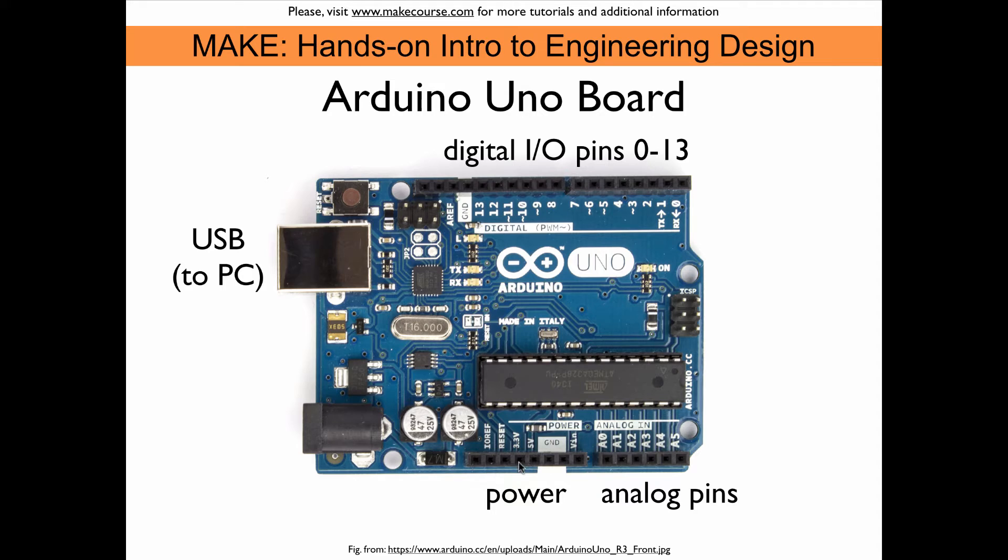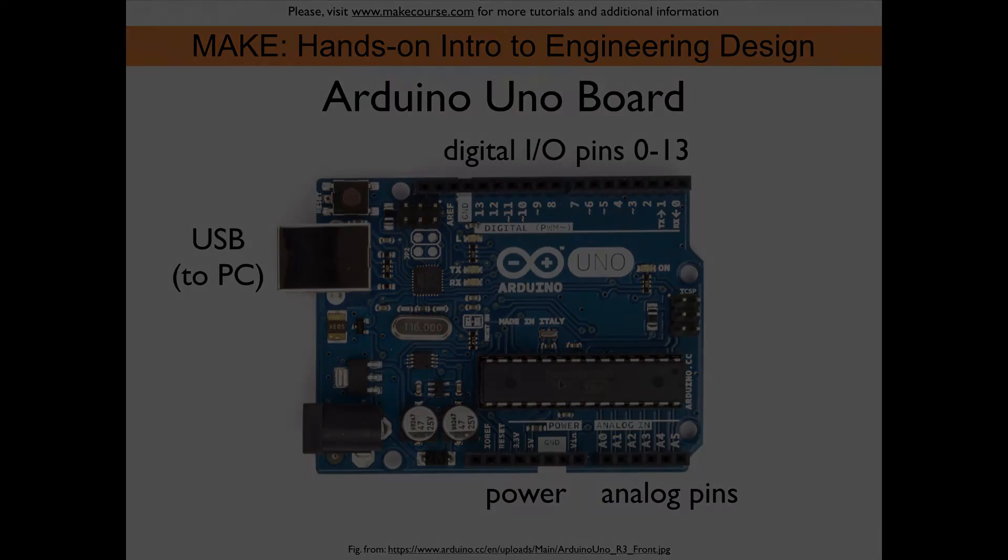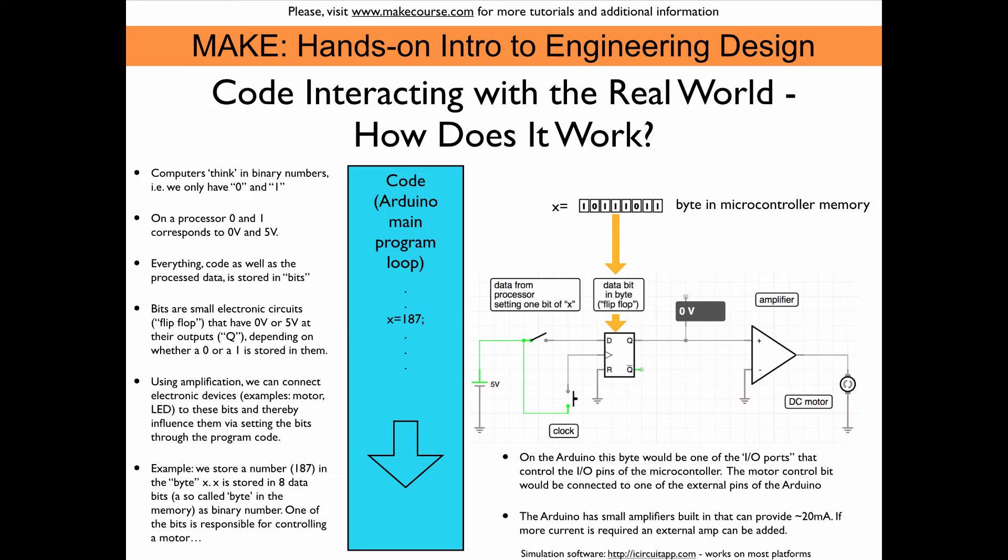These headers here, they deal with the power. So you can connect the microcontroller to 5 volts and ground. And we also have here a reset pin. Now this here is the USB connector. With this you can connect the board to the computer. And that enables you to put a code on this microcontroller. So before we're done, I want to discuss a little bit how this code actually turns into a real-world interaction.